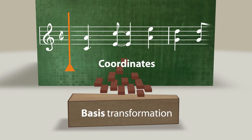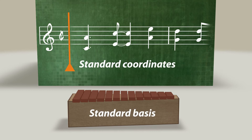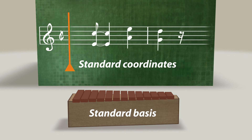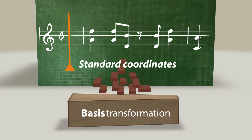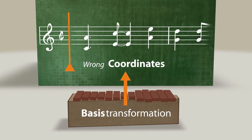Let us transform the bass by swapping around the bars. Then we return to the standard bass, namely to the xylophone as we know it, with the notes in ascending order. We might as well, however, also do it the other way around. If we transform the bass and say that that is supposed to be the proper bass, then the coordinates are wrong.